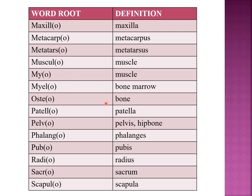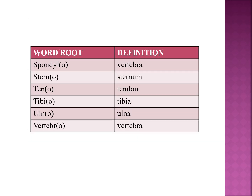Osteo means bone; patello means regarding patella; pelvo means pelvis or hip bone; phalingo means regarding the phalanges; pubo indicates pubis; radio indicates radius; sarco indicates sacrum; scapulo indicates scapula; spondylo indicates vertebrae; sterno indicates sternum; tibio indicates tibia; ulno indicates ulna; and vertebrae indicates vertebrae. Both spondylo and vertebrae indicate vertebrae.